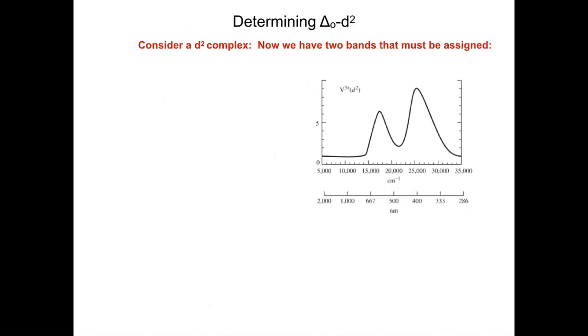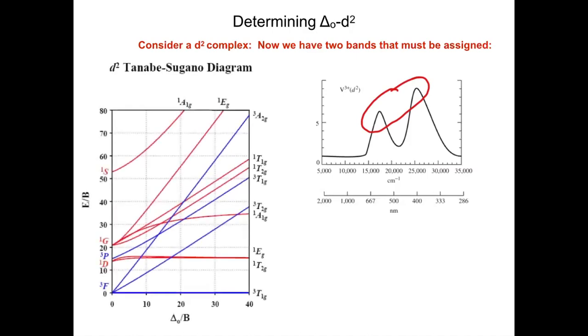How do we find delta octahedral if we have a more complex system such as that vanadium complex we started off looking at? This is a D2 complex. We now see we have two electronic transitions present here. How do we actually go about finding delta octahedral? We're going to pull up the Tanabe-Sugano diagram for a D2 complex.